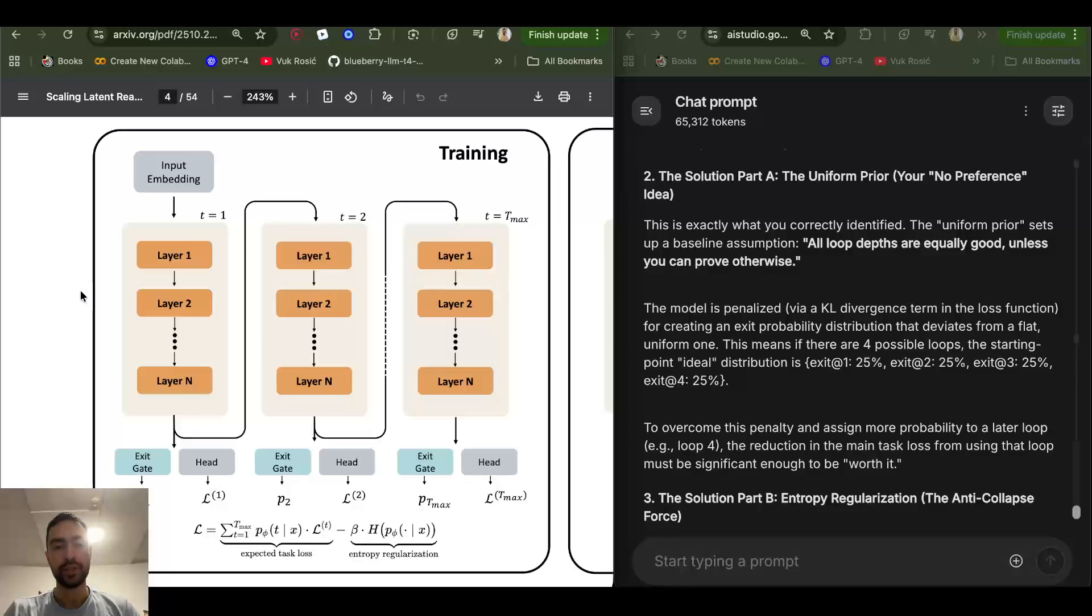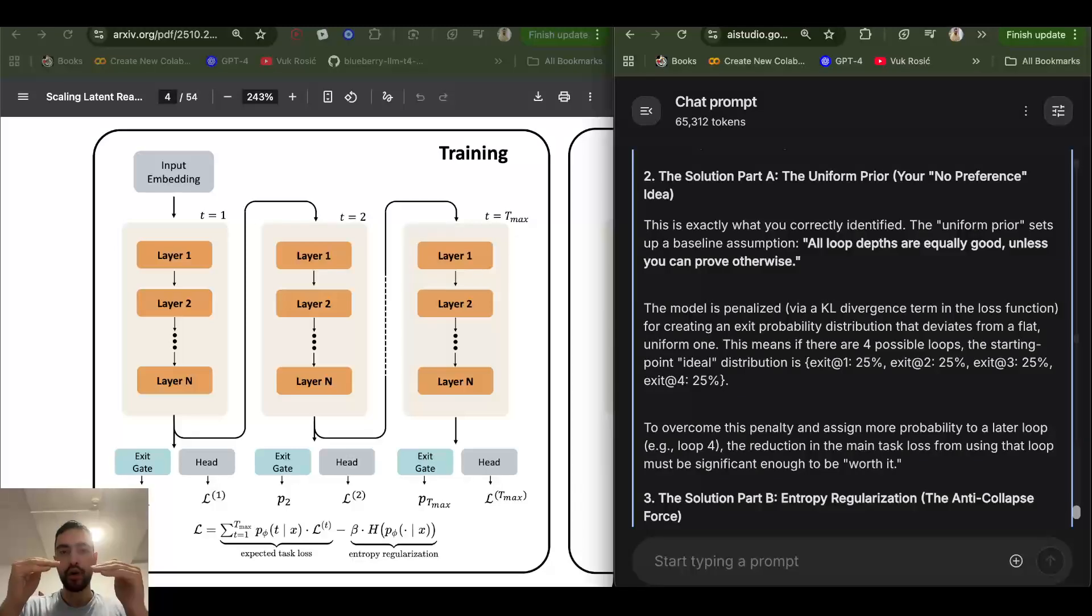So for example, if you have four loops, the model would have 25% chance to exit at first, 25% second, third, etc. So equal probability to exit at all four loops. And then they assign penalty. So there is more loss if one of those loops gets higher probability. So it's like a KL divergence loss, which I made a video about. So you want it to be uniform, so they force the model to make it uniform. If some of the loops, like fourth, last loop has higher probability, then that will add a bit of loss.